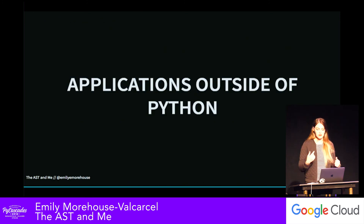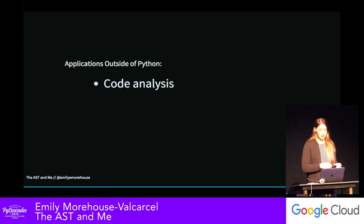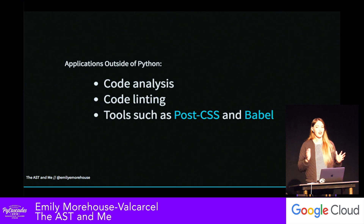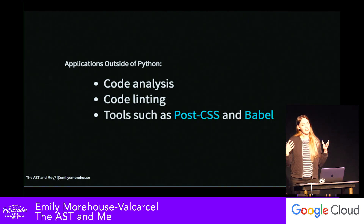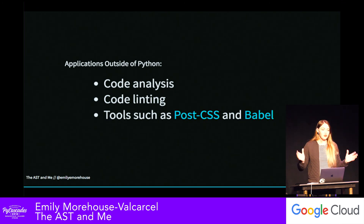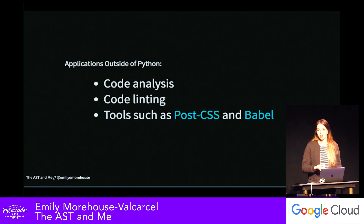What are some applications outside of Python? You can use ASTs for varieties of code analysis or code linting. There are also tools such as PostCSS or Babel in the JavaScript world that allow you to take CSS or JavaScript, transpile it into something more readable by browsers, and improve your code by reducing boilerplate with mix-ins or functions to enhance your source code.